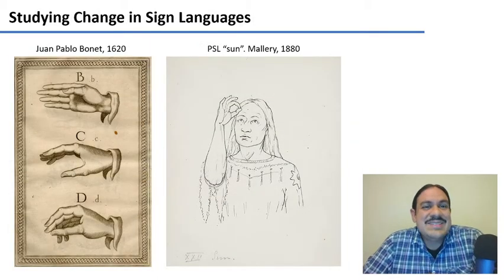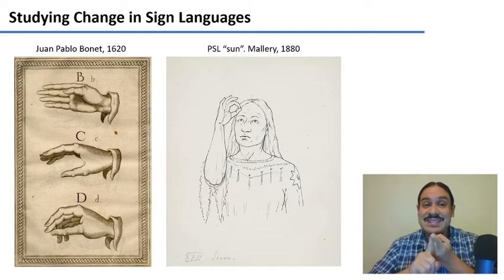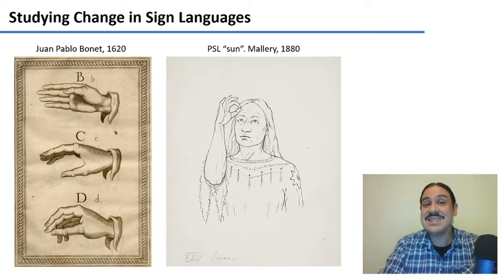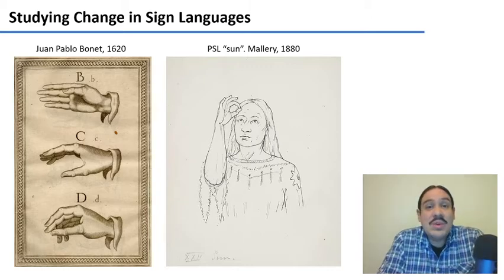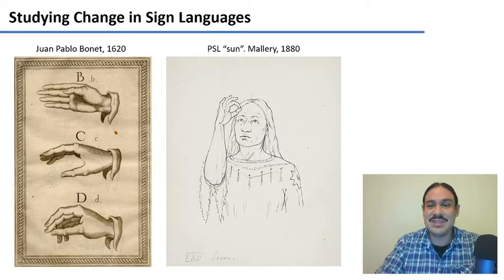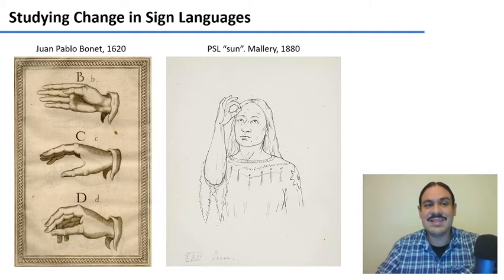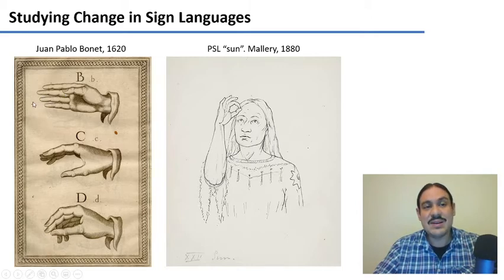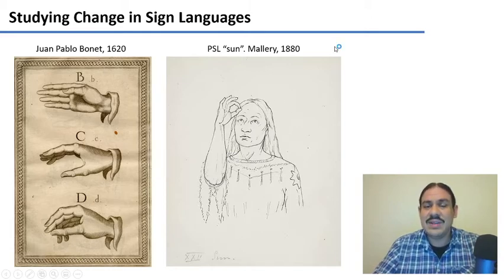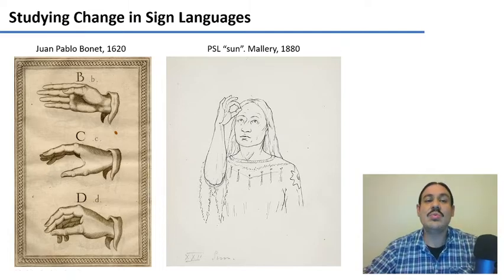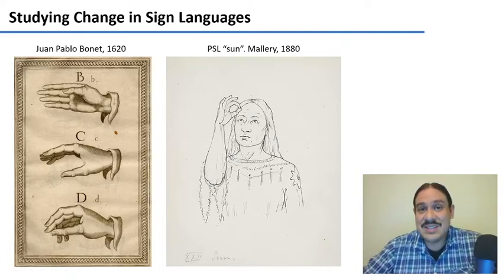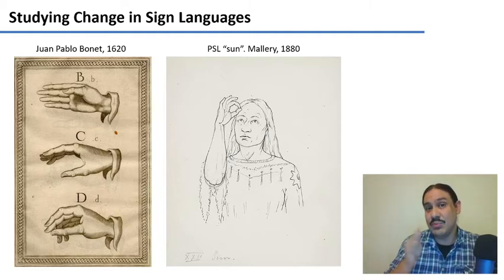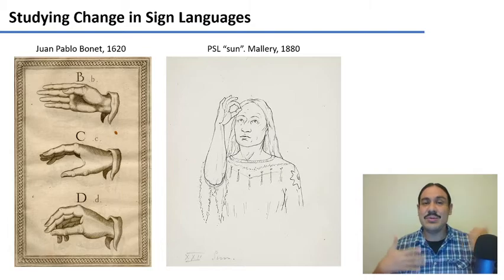It is very difficult to study historical linguistics in sign languages, first of all because they have no writing system, so we can only go so far into the past. We know that people have always used sign languages because we find references to them in the works of Greek philosophers. Throughout history, people have noted that sign languages are used. This is an example of how the manual alphabet for the sign language of Spain was used in 1620, and this is a drawing from 1880 of the Plains Sign Language word for 'sun.' Starting in the 1850s, old movies also help us study how sign languages were used in the past.